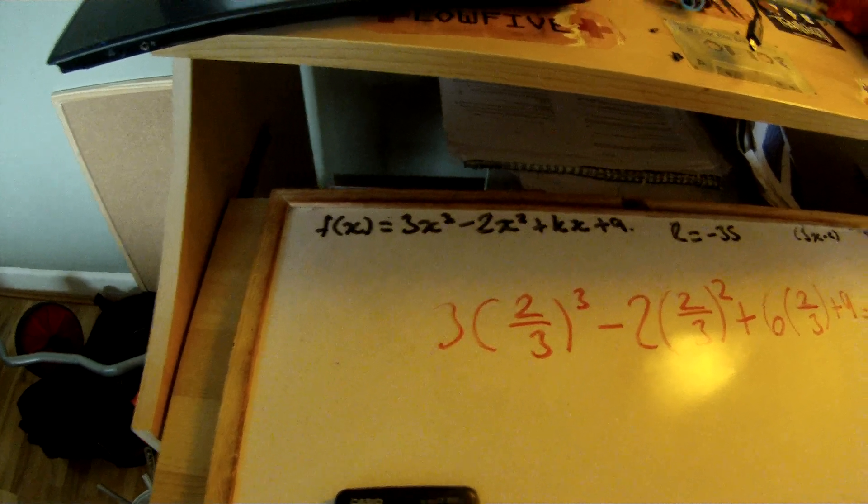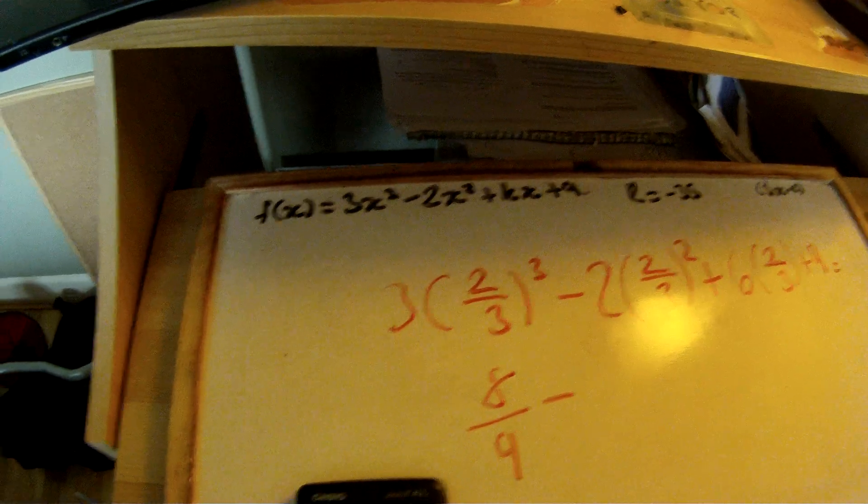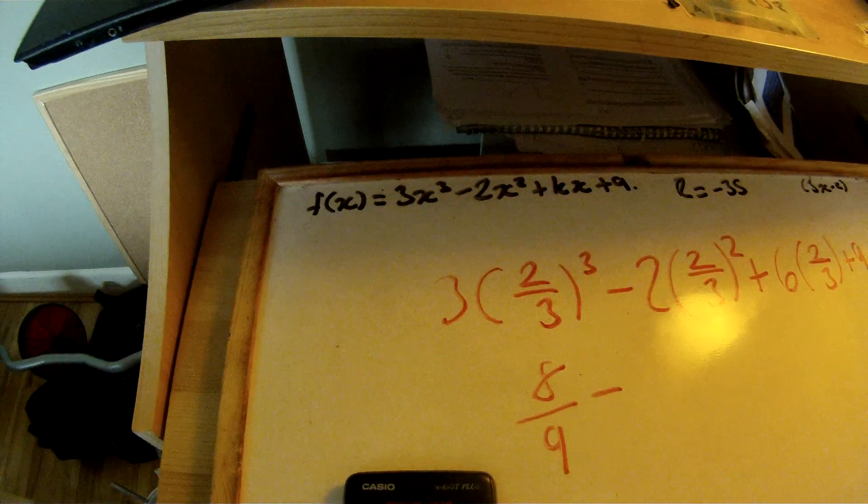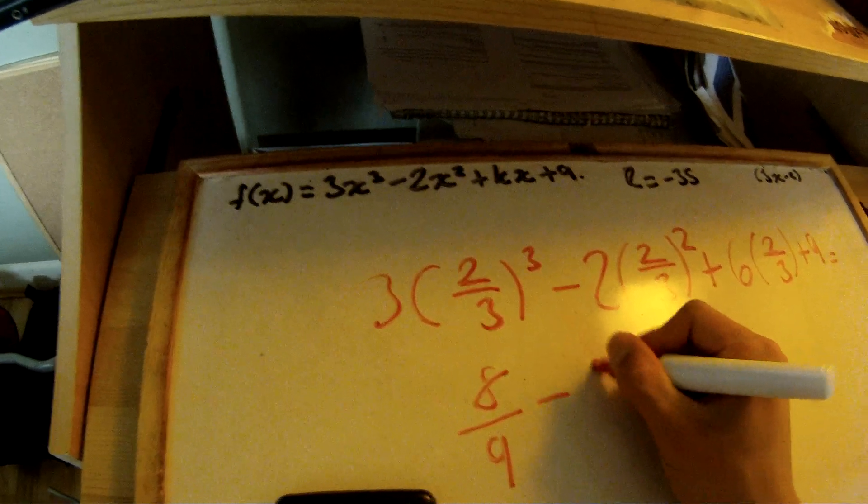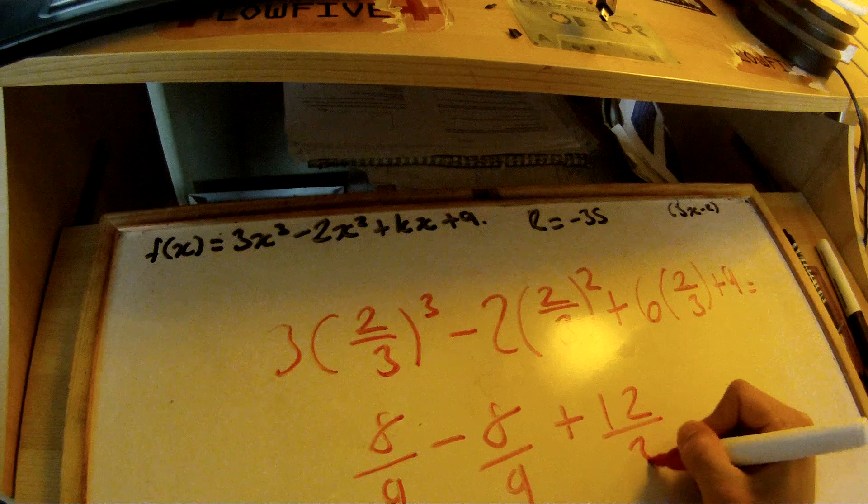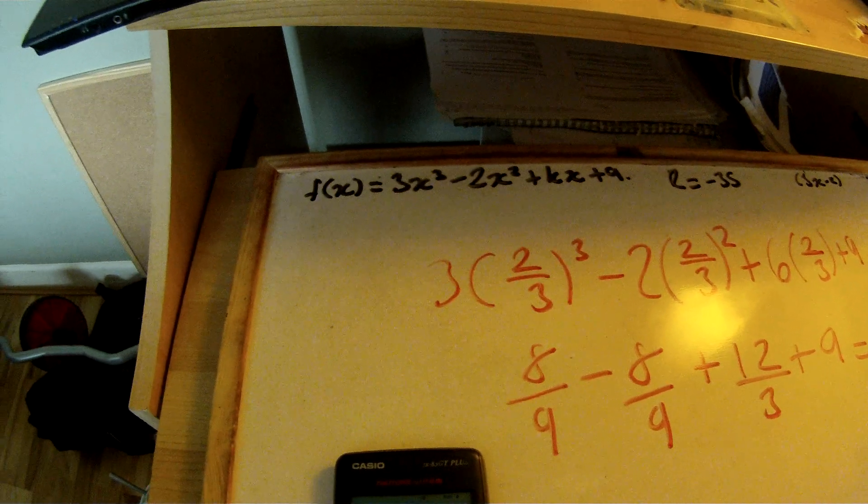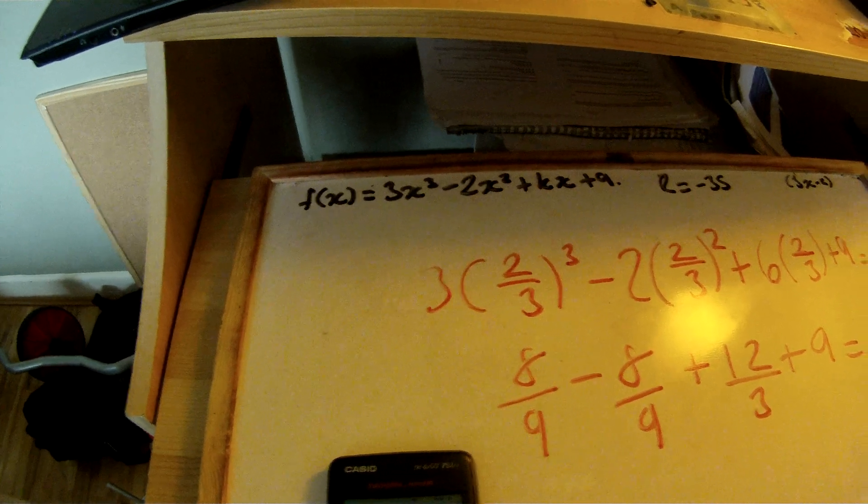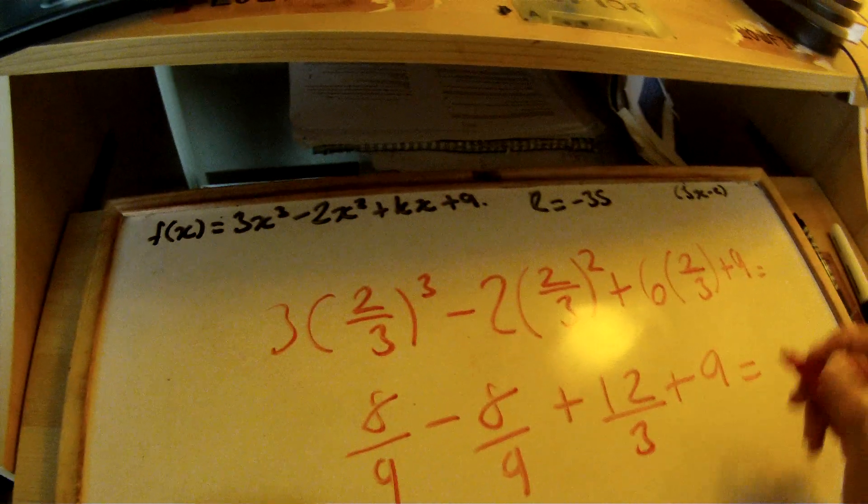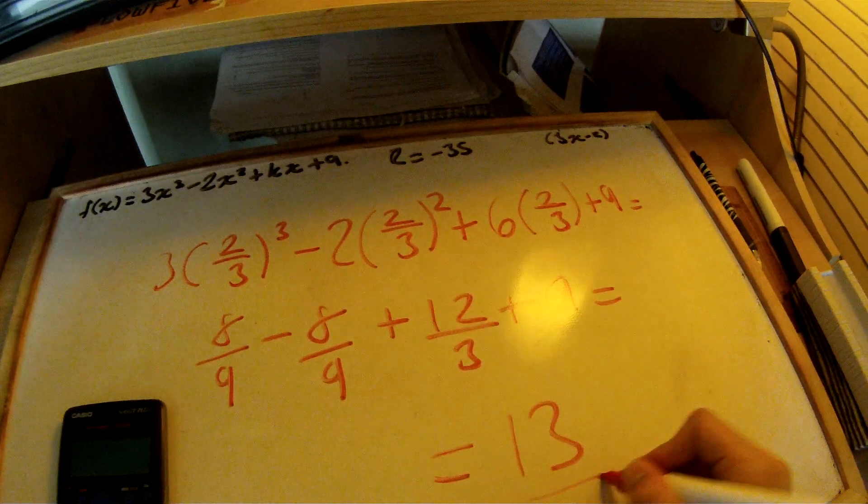Quickly simplifying this, we get 8 ninths minus 8 ninths plus 12.03 plus 9 equals the remainder. Simplify this even more and you get the remainder as 13. That is your answer.